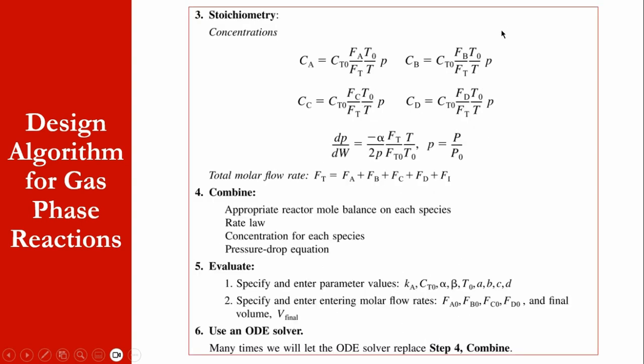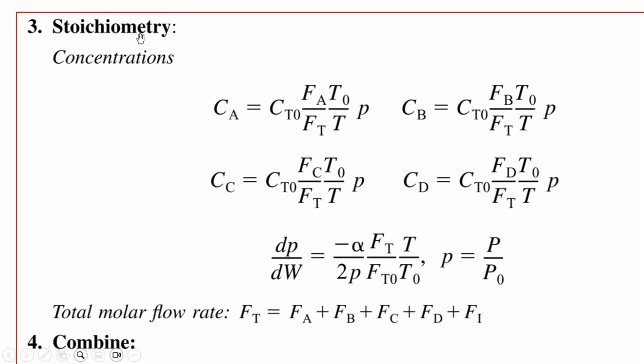Then applying the stoichiometry concept from chapter 4: CA = CT0·(FA/FT)·(T0/T)·p, and that is the pressure ratio.